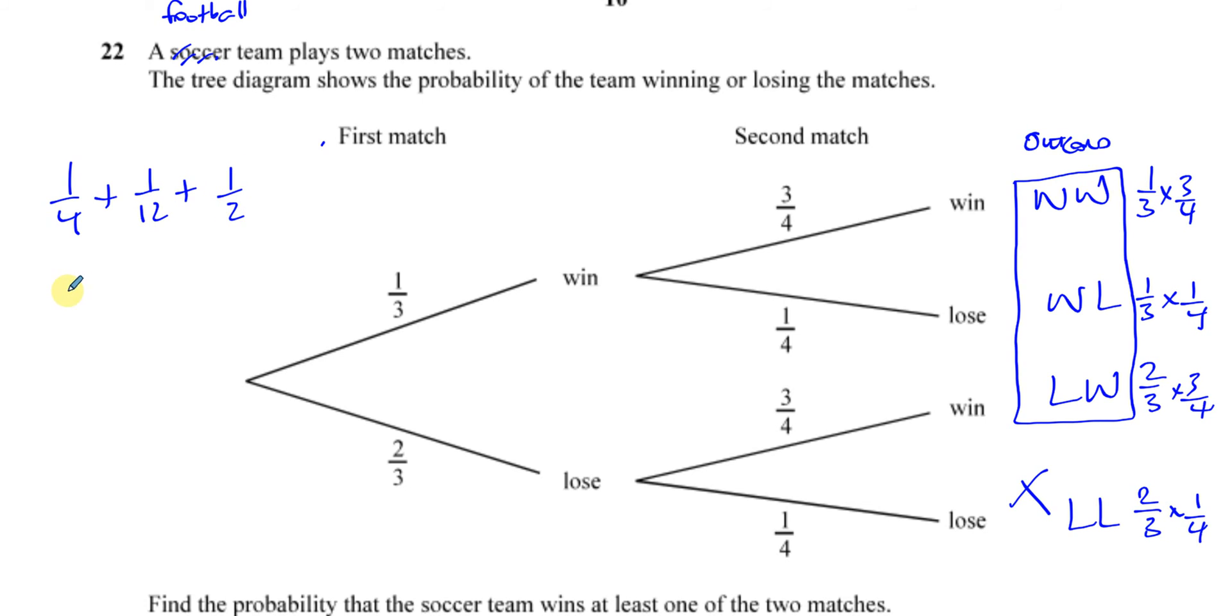If I was to add these together, I'd make them all under the same denominator of twelve. That's three over twelve, that's one over twelve, and that's six over twelve. That gives me ten over twelve, which we can see is the same thing as five over six.